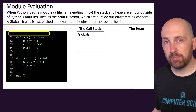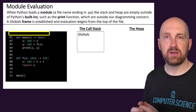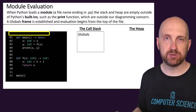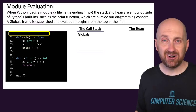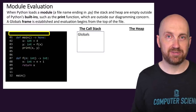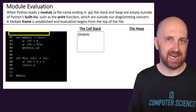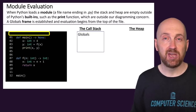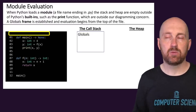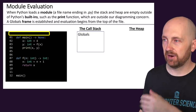When a Python module evaluates, we start at the very top. For that module evaluation, we assume our globals frame is essentially empty. There actually are some special reserved things set up by Python in the background, like the __name__ variable and some other special things, but those are specific to Python and we're not going to worry about illustrating them in these diagrams.